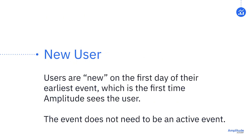Amplitude defines a user as new on the day of their earliest event, which is the first time Amplitude sees the user. New users don't have to trigger an active event to be new. In an event segmentation chart, when choosing New Users, Amplitude will look for events fired by new users within the time interval that the user was new. For example, if the interval was set to daily and a user was new on July 17th, only the events that happened on July 17th would appear in the chart, regardless of whether the user also fired events the next day. If the chart was set to weekly, the user would be considered new for that week; if set to monthly, new for that month.